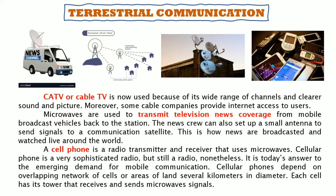A cell phone is a radio transmitter and receiver that uses microwaves. Cellular phones are sophisticated radios and represent today's answer to the demand for mobile communication. Cellular phones depend on overlapping networks of cells — areas of land several kilometers in diameter — each with a tower that receives and sends microwave signals. For example, networks like Smart, Globe, Sun, TM, and Talk and Text each have their own towers used for communication.